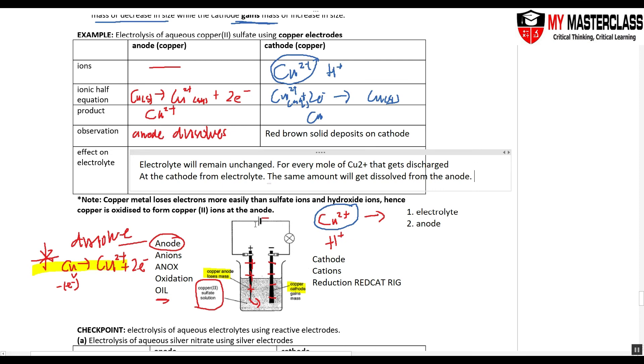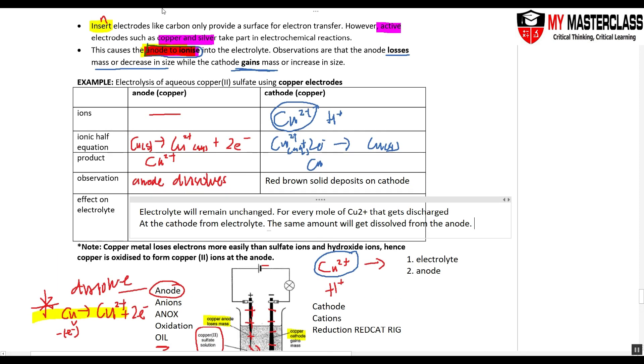Please remember the most important takeaway point today is if I'm using an active electrode, the anode will dissolve. This is the oxidation reaction that we write where your anode is dissolving.